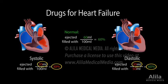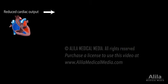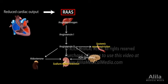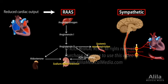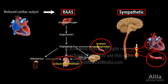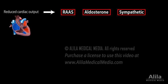The pathophysiology of heart failure involves a vicious cycle in which reduced cardiac output, as a compensatory response, activates the renin-angiotensin-aldosterone system and sympathetic system. However, these systems cause vasoconstriction, increased heart rate and blood pressure, making it even harder for the heart to pump. Increased aldosterone level also promotes ventricular remodeling, myocardial scarring, and vascular injury, worsening the disease.